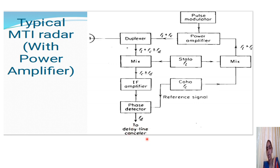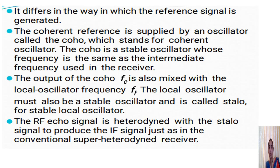The delay line canceller function was covered in the previous section. This MTI radar with a power amplifier can be used even in clutter and noisy environments. The main difference from the ordinary MTI radar is how the reference signal is taken from a coherent oscillator, and that a stable local oscillator and a duplexer using a single antenna for transmission and reception are employed.